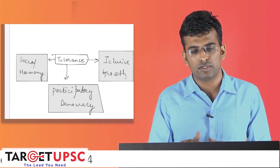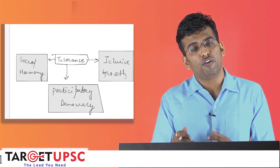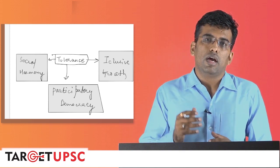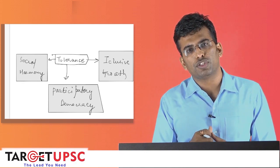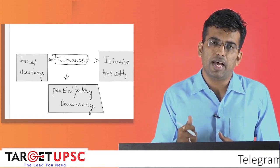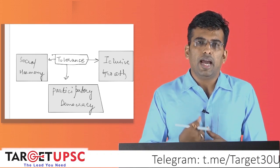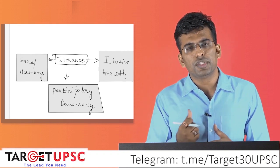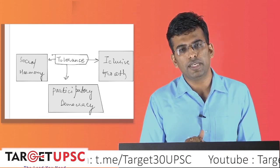When you talk about tolerance, you have to draw a diagram which ensures that tolerance is important for inclusive growth, because it takes into consideration the views of the weaker section. Secondly, tolerance also leads to social harmony. As we see there is rising mob lynching and rising communalism, the value of tolerance would ensure that there is social harmony.